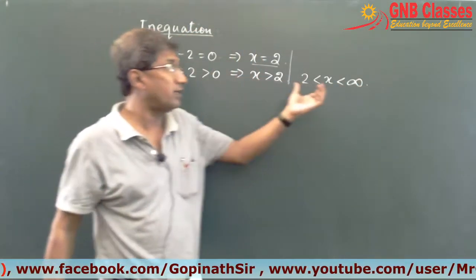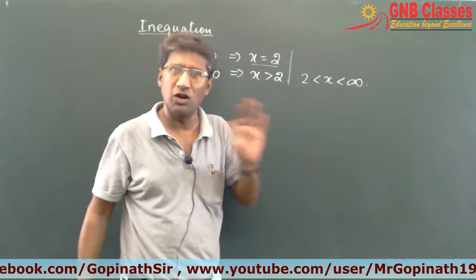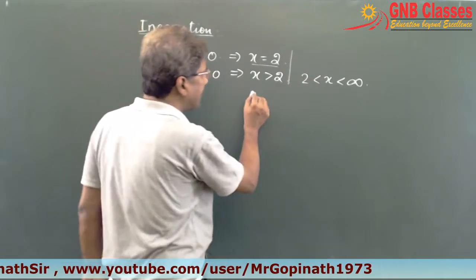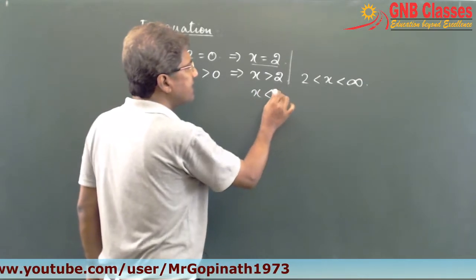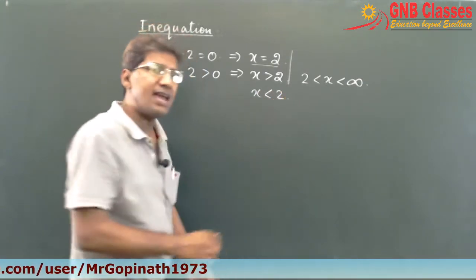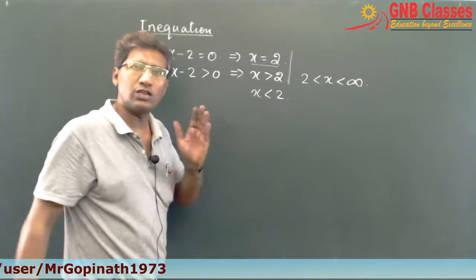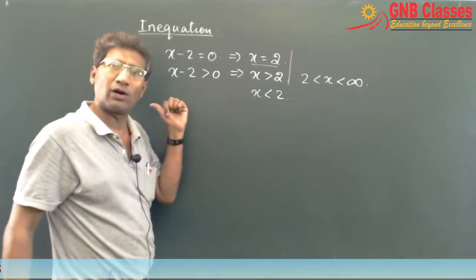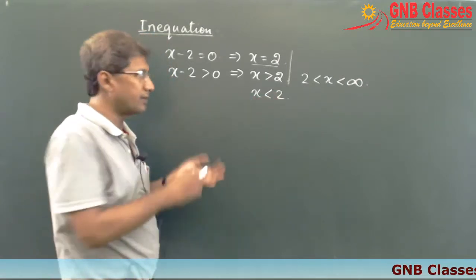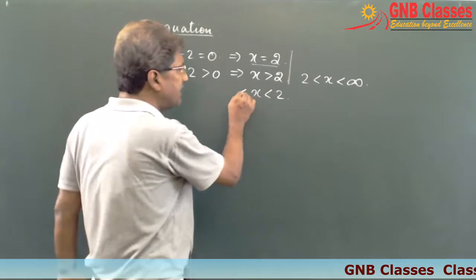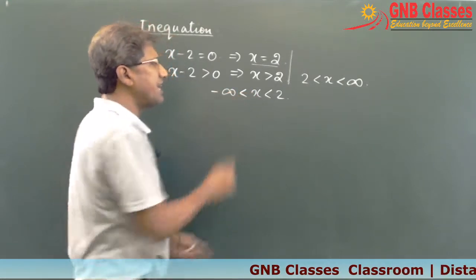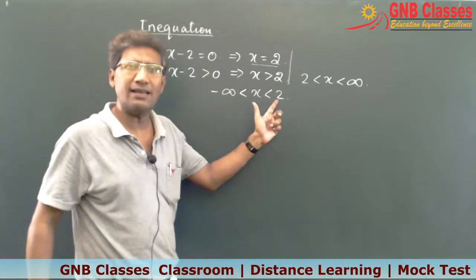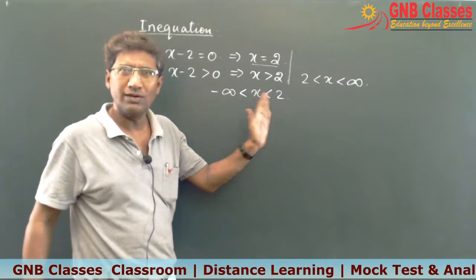So this is what your inequation is all about. Now suppose if x is less than 2 — where will it end? It will end at minus infinity. So it will be: x is greater than minus infinity but less than 2.